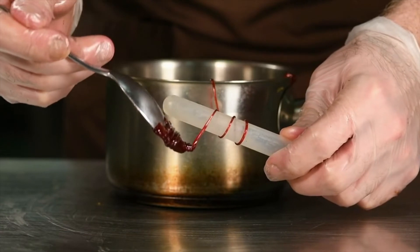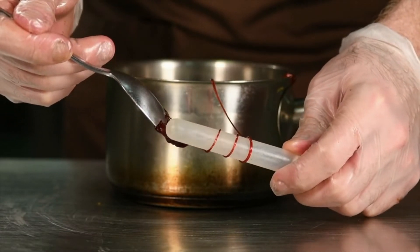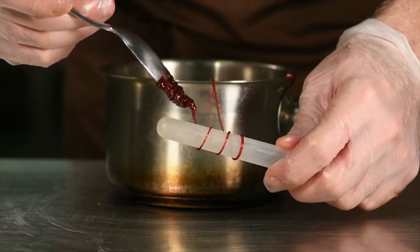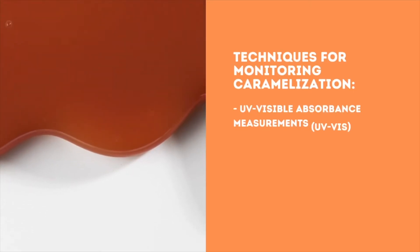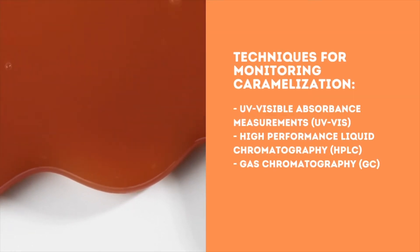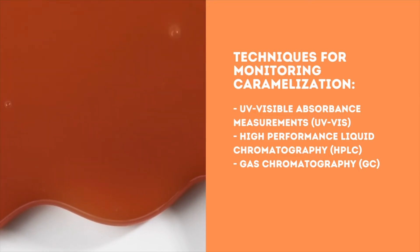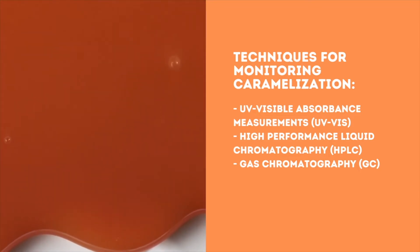The progress of caramelization reactions is monitored visually as well as analytically using various techniques such as UV-visible absorbance measurements (UV-Vis), high-performance liquid chromatography (HPLC), and gas chromatography (GC).